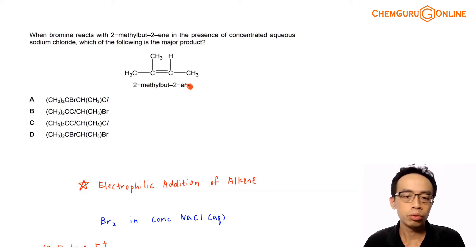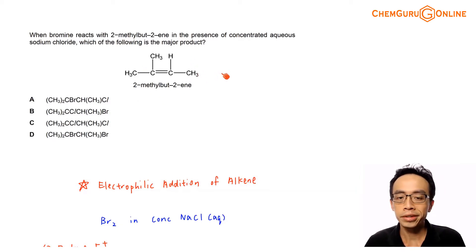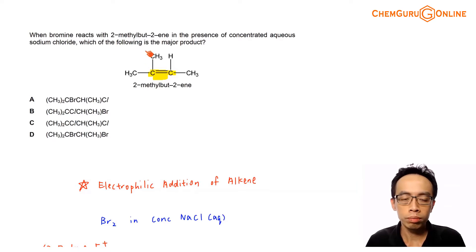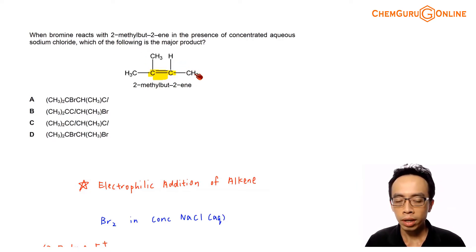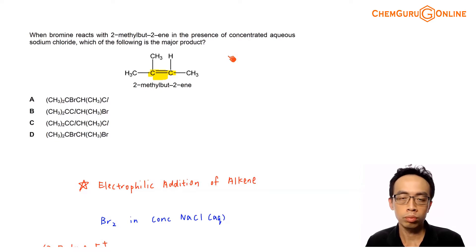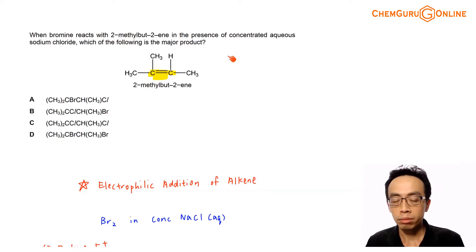So 2-methylbut-2-ene is given here. We notice this alkene is asymmetrical. Looking at the alkene carbons, the carbon on the left-hand side is attached to two methyl groups, and the carbon on the right-hand side is attached to a hydrogen and a methyl group. So the alkene is asymmetrical, and therefore when we consider adding two groups to it, we will have to consider major and minor products.